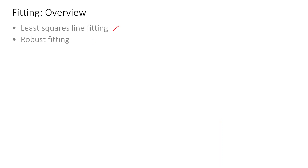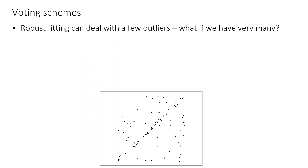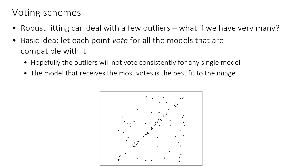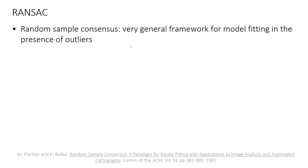Now let's look at RANSAC. Robust fitting can deal with a few outliers, but if we have many outliers we have to use RANSAC. Basically, let each point vote for all models that are compatible with it — hopefully outliers will not vote consistently for any single model. The model that receives the most votes is the best fit. Random Sample Consensus is a very general framework for model fitting in the presence of outliers.